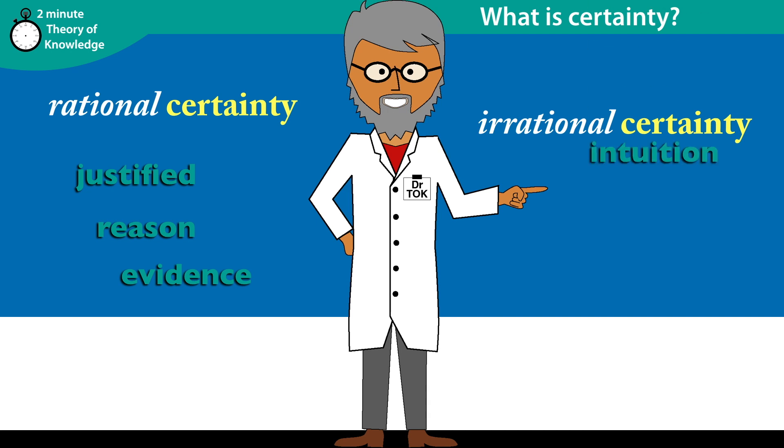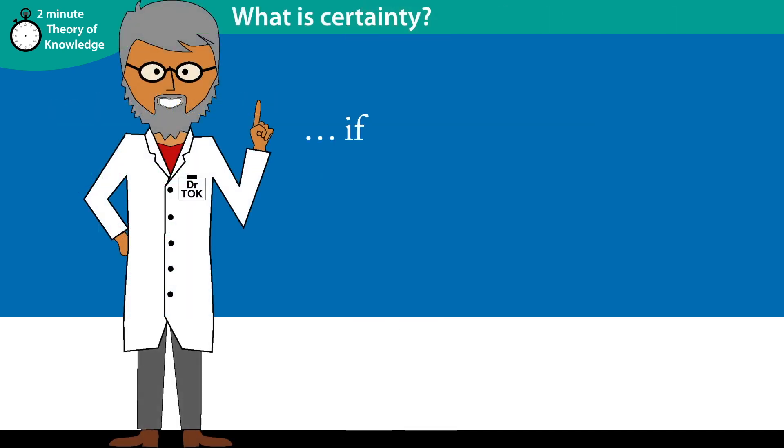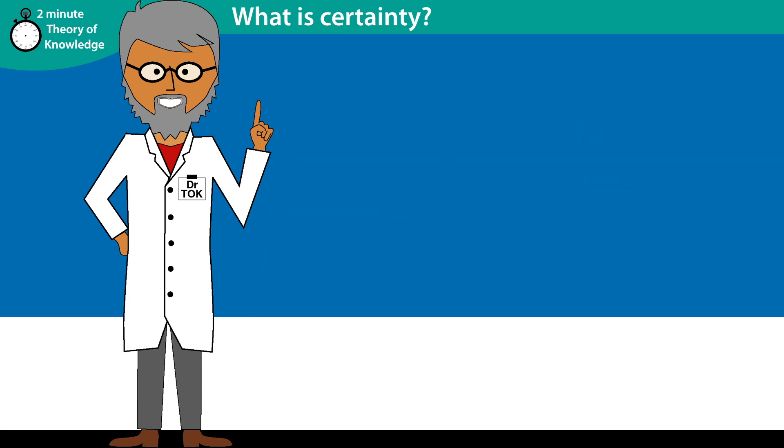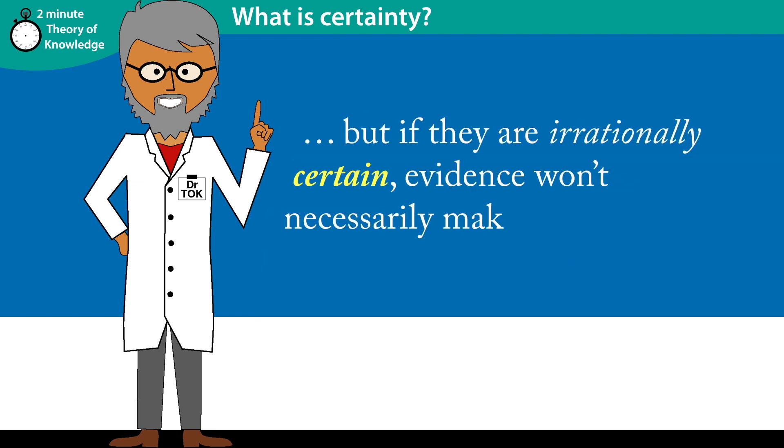Irrational certainty, based on intuition or faith, is not necessarily wrong, but it is harder to change if it is wrong. If a person is certain based on evidence, you can change their mind by providing new or better evidence. But if they are irrationally certain, evidence won't necessarily make a difference to them.